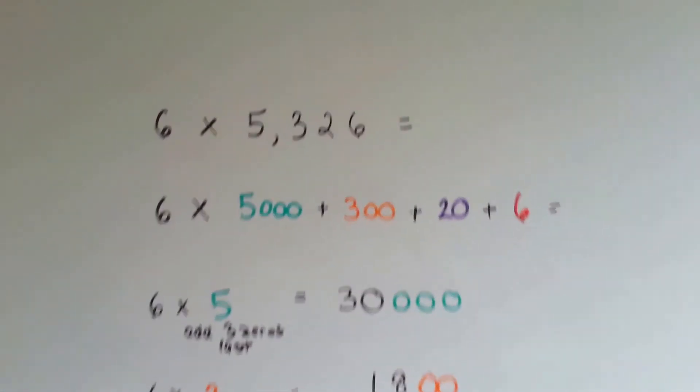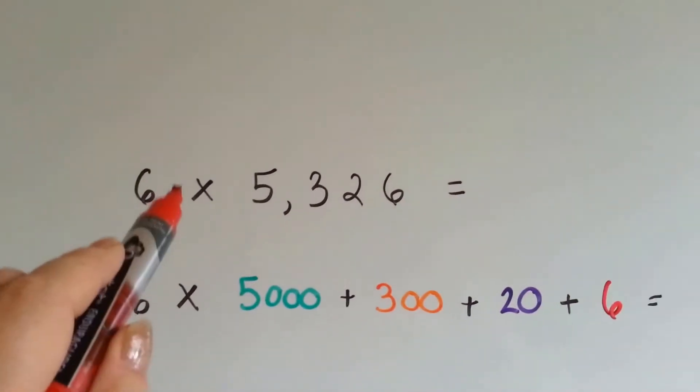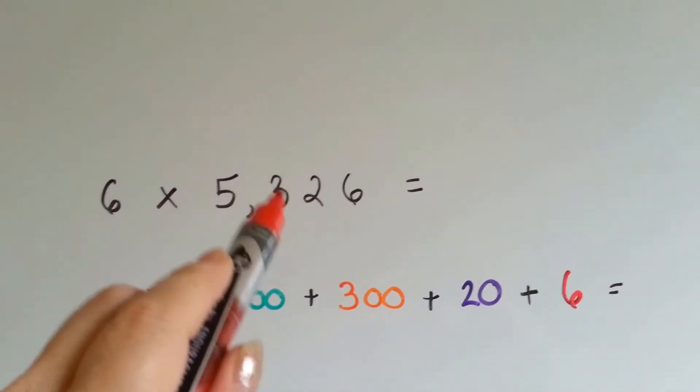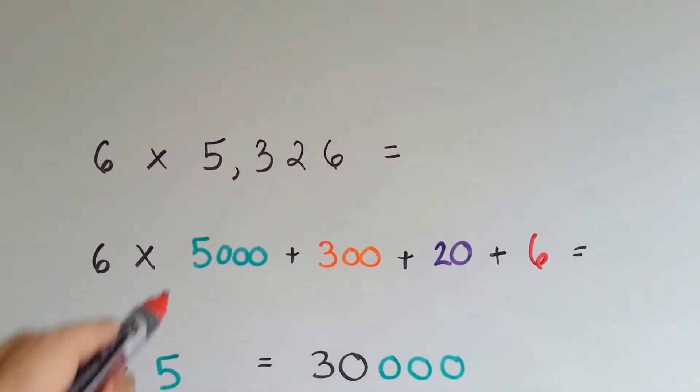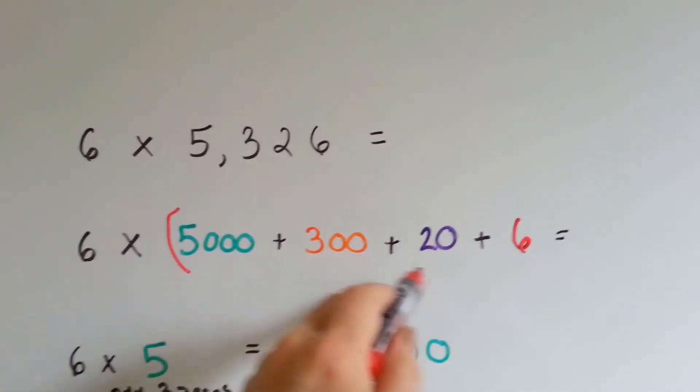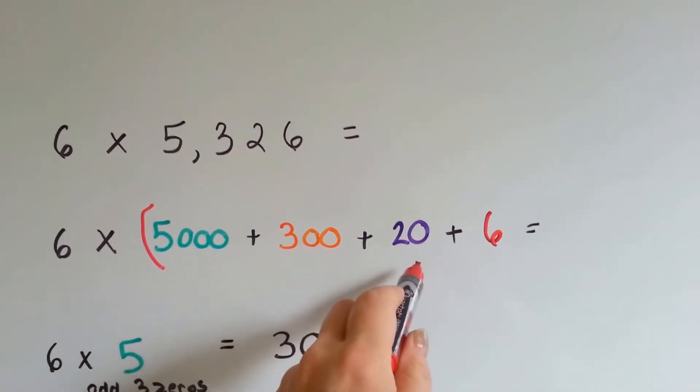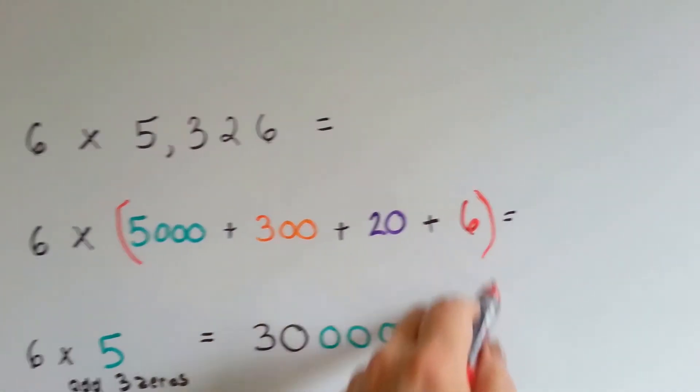One last one, just to make sure you've got it. We're going to do 6 times 5,326. So that means we're going to do 6 times 5,000 plus 300 plus 20 plus 6.